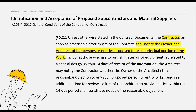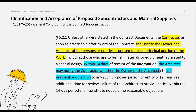So, with that, let's get into it. Section 5.2.1 of the AIA A201 General Conditions for the Contract for Construction contains two key components. First, the contractor is required to notify the owner and architect of the persons or entities proposed for each principal portion of the work. Second, upon receipt of the contractor's notification, the owner and architect have 14 days to reasonably reject any of the proposed subcontractors or suppliers.